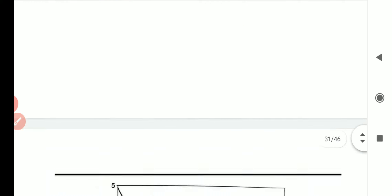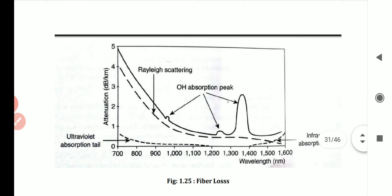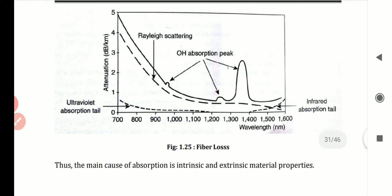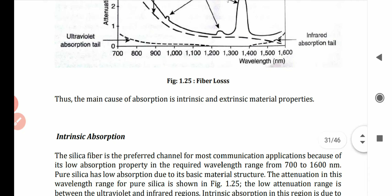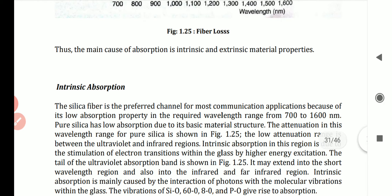A graph shows the fiber losses during absorption. On the y-axis is attenuation in dB/km, and on the x-axis is wavelength in nanometers. The various types of attenuation at various wavelengths are shown. Absorption is of two types: intrinsic absorption and extrinsic absorption.